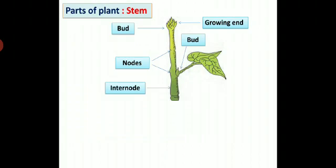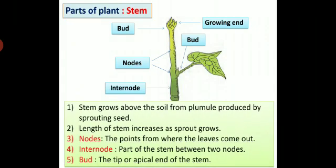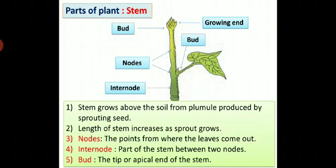Next part of the plant is stem. Observe the diagram. You can see different parts of a stem. Stem grows above the soil from plumule, which is produced by a sprouting seed. Length of stem increases as sprout grows.